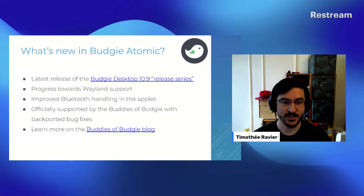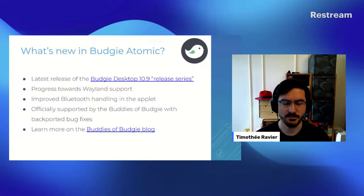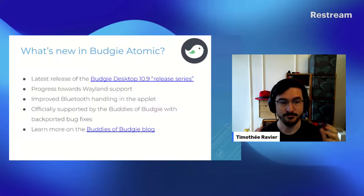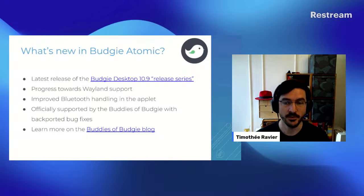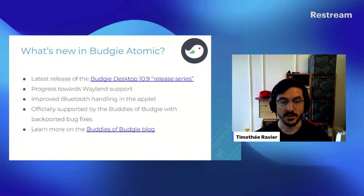Then we have Fedora Budgie Atomic, which was Fedora Onyx before. It comes with the latest release in the Budgie 10.9 release series. They've made progress toward Wayland support — not fully ready yet, but progress is happening — along with improved Bluetooth handling and a lot of backport fixes especially for Fedora users. One of the developers is part of the Fedora community and they are officially supporting this variant. If you want to know more about Budgie development, follow their blog where they write all the release notes.